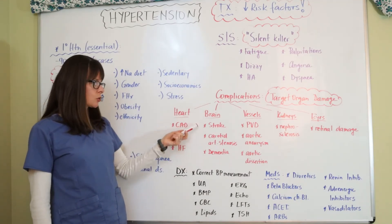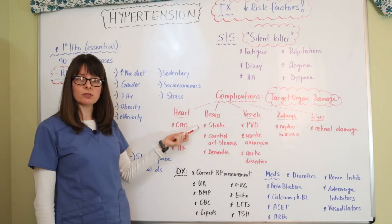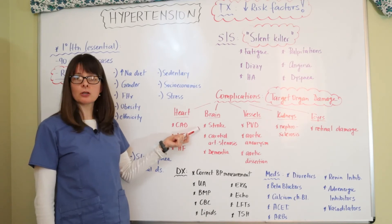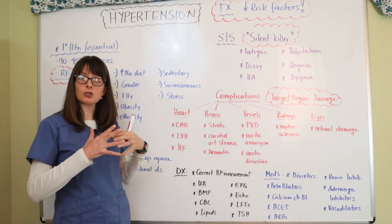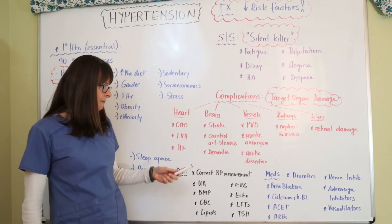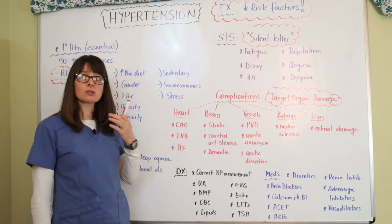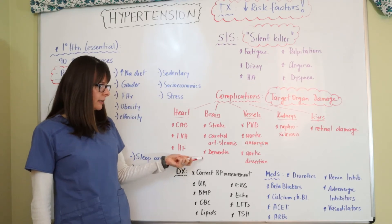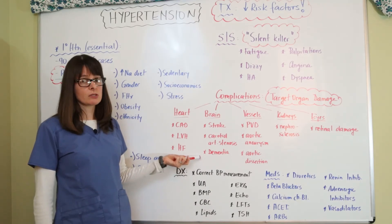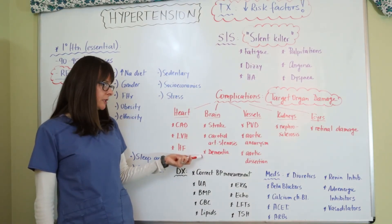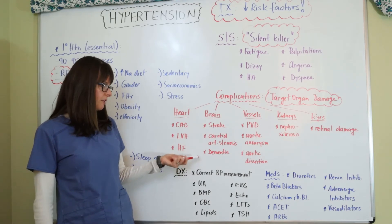In the brain, hypertension can cause an ischemic stroke due to atherosclerosis and clogged arteries from risk factors like diabetes and hyperlipidemia. It can also cause a hemorrhagic stroke when blood vessels are under so much pressure that they rupture and the patient has an intracranial bleed. It can also lead to carotid artery stenosis, a high risk factor for stroke, and is believed to contribute to dementia, which we see a lot of in our older population.